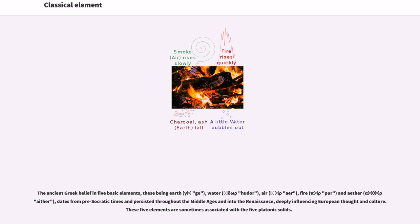The ancient Greek belief in five basic elements, these being earth, gamma ge, water, delta omega rho, air, alpha epsilon rho, fire, pi upsilon rho, and ether, alpha iota theta eta rho, dates from pre-Socratic times and persisted throughout the middle ages and into the renaissance, deeply influencing European thought and culture. These five elements are sometimes associated with the five platonic solids.